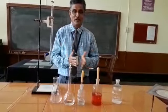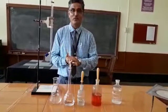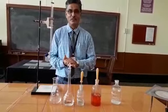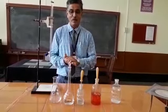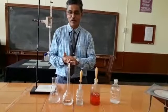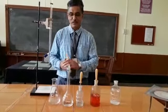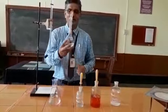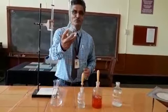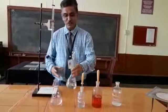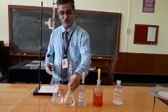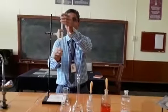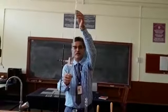Alkalinity is a measure of the ability of water to neutralize an acid. To measure alkalinity, we require sulfuric acid at a concentration of around 0.024 N. This sulfuric acid, which is used as the titrant, is taken in the burette and filled up to the mark.